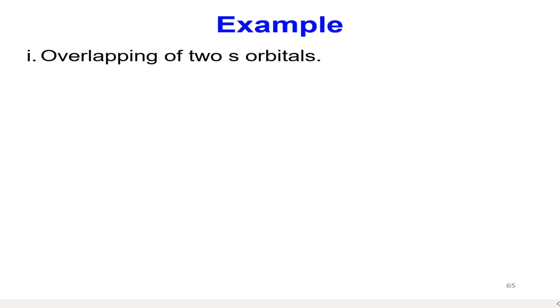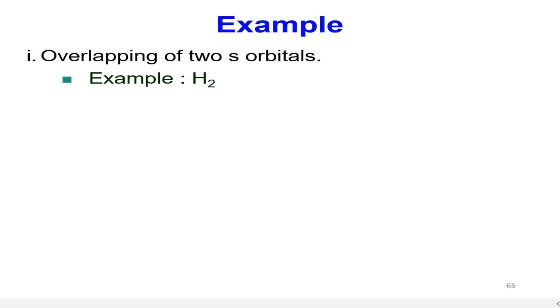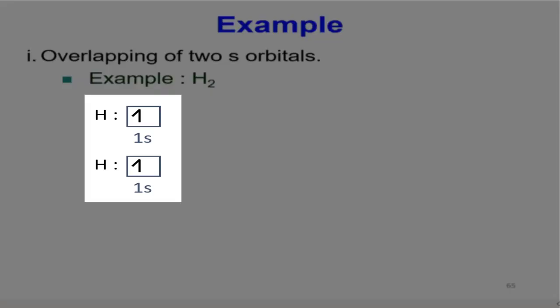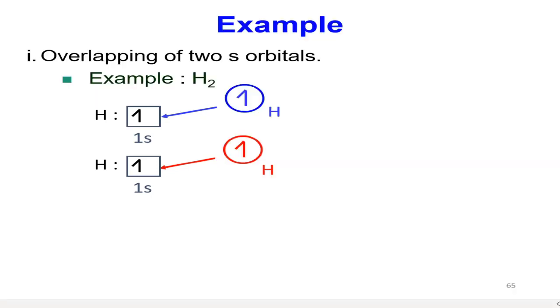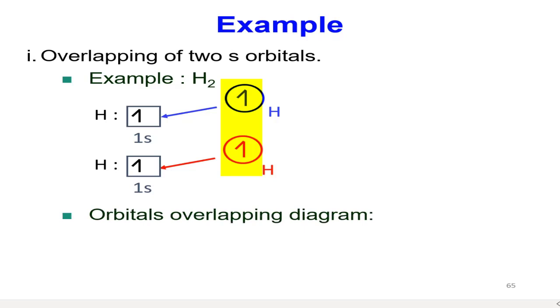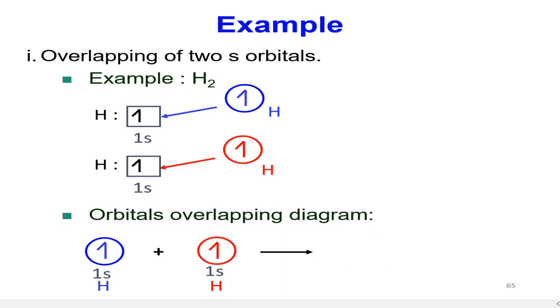Now we look at the first way a sigma bond forms: overlapping between two s orbitals. We take hydrogen gas (H₂) as the example. Hydrogen has one valence electron located in a 1s orbital, which is spherical in shape. In order to achieve a duplet, hydrogen will share its electron, and the overlapping of two s orbitals forms a sigma bond.